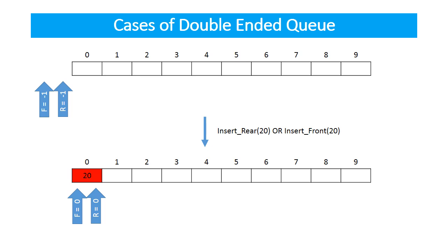There are some special cases which exist in double ended queue which we have to handle. For example, if the double ended queue is previously empty, that is, the value of front and rear is minus one. In that case, whether you call insert rear or insert front, the same operation will be performed: front and rear both will be set to index 0, and we will insert the element — for example 28 — at index 0.